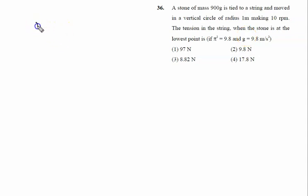A stone of mass 900 grams - mass is given by 900 divided by 1000 to convert into kilograms - is tied to a string and moved in a vertical circle. This is motion in a vertical circle.